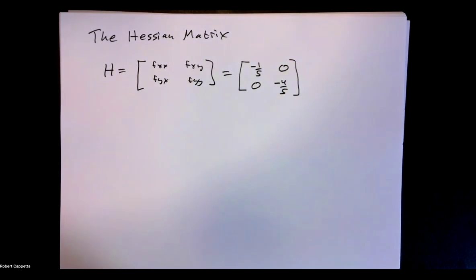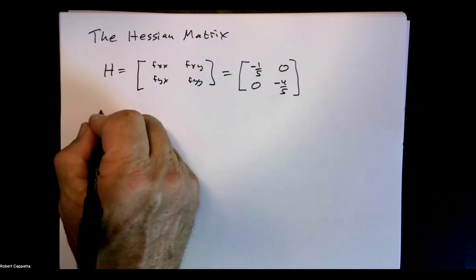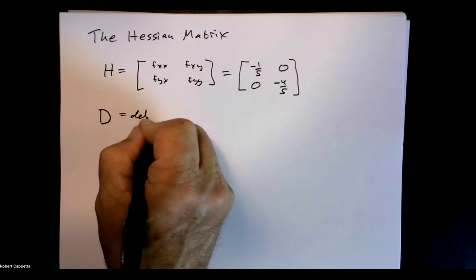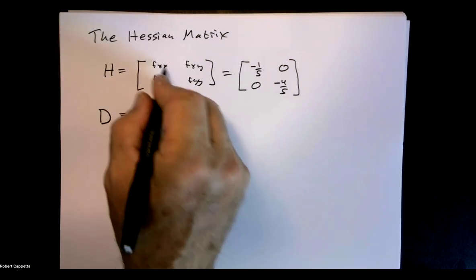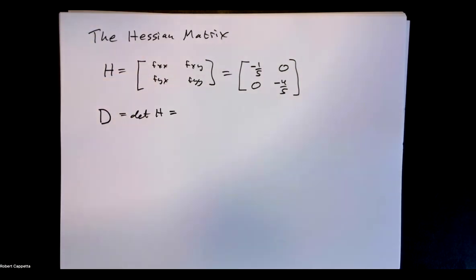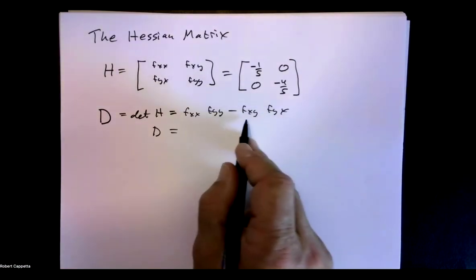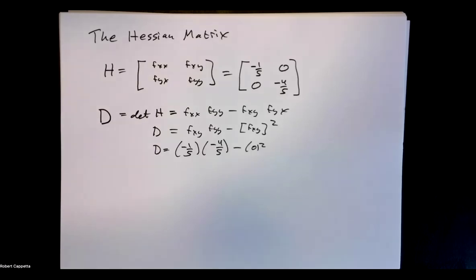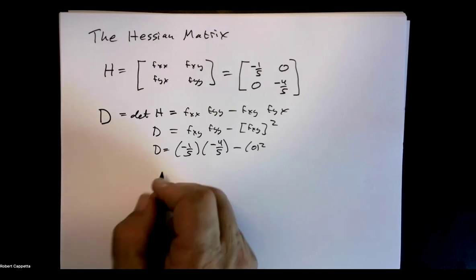The Hessian matrix is the set of second derivatives. Plugging in our values: f sub x, x was negative 1 fifth; f sub x, y was 0; f sub y, x was 0; and f sub y, y was negative 4 fifths. Now we're going to create something I call D that will determine whether something is a minimum or a maximum. That is the determinant of the Hessian matrix: f x,x times f y,y minus f x,y times f y,x. Plugging in our values: negative 1 fifth times negative 4 fifths minus 0 squared, which gives me 4 twenty-fifths.